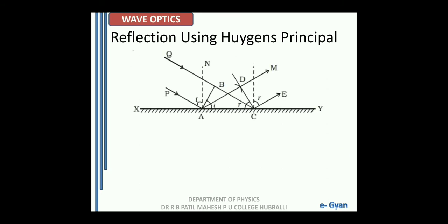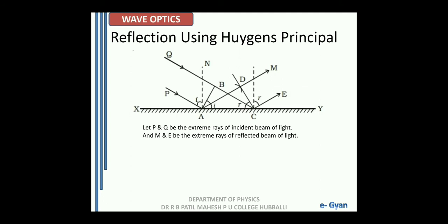Try to understand the diagram. We have the reflecting surface XY on which a beam of light consisting of two extreme rays P and Q is incident. P is incident at point A, Q is incident at point C, and after reflection the reflected rays become M and E. Thus, we say let P and Q be the extreme rays of the incident beam of light and M and E be the extreme rays of the reflected beam of light.